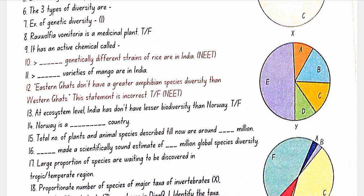The Eastern Ghats do NOT have greater amphibian species diversity than the Western Ghats — that statement is false; the correct statement is that the Western Ghats have greater amphibian diversity. At the ecosystem level, India does not have lesser biodiversity than Norway — that is also false, as Norway is a Scandinavian country with lower biodiversity.